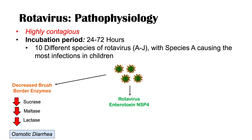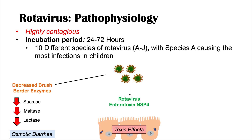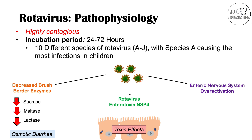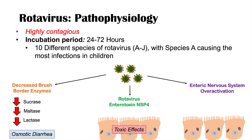Rotavirus also has an enterotoxin known as NSP4, which has direct toxic effects on the gastrointestinal mucosa and enterocytes. Additionally, rotavirus infections lead to an overactivation of the enteric nervous system — the nervous system of the gastrointestinal system — causing fluid and electrolytes to be pumped out from the gastrointestinal mucosa into the lumen, also causing watery diarrhea. Multiple mechanisms lead to this osmotic diarrhea with significant fluid loss.